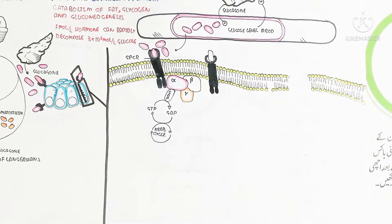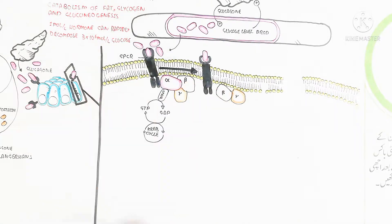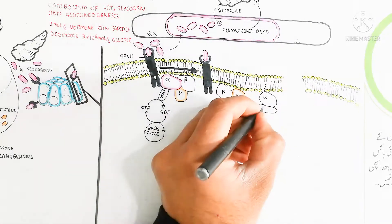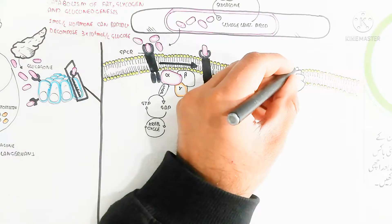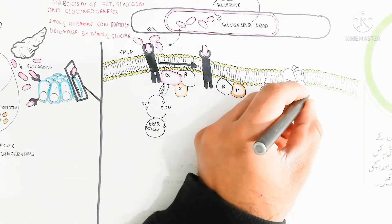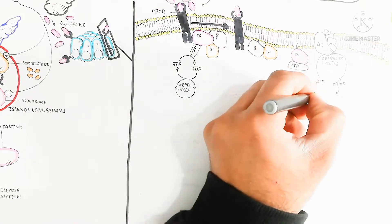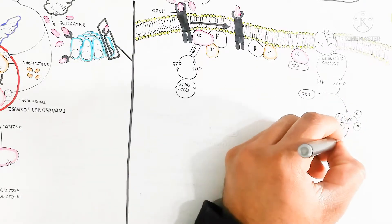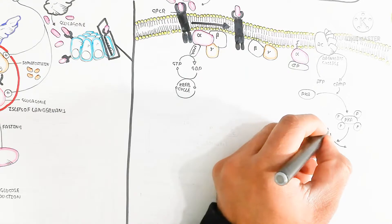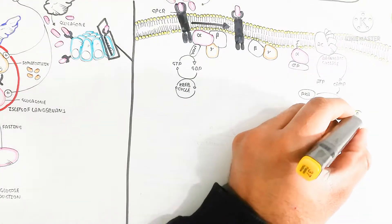After activation, the beta and gamma subunits — the trimeric subunit — become dimeric, and the monomeric alpha subunit separates. The alpha subunit bound to GTP becomes active and stimulates adenylate cyclase, an integral membrane protein. Adenylate cyclase uses ATP to produce cyclic AMP (cAMP), the second messenger, which then stimulates protein kinase A.